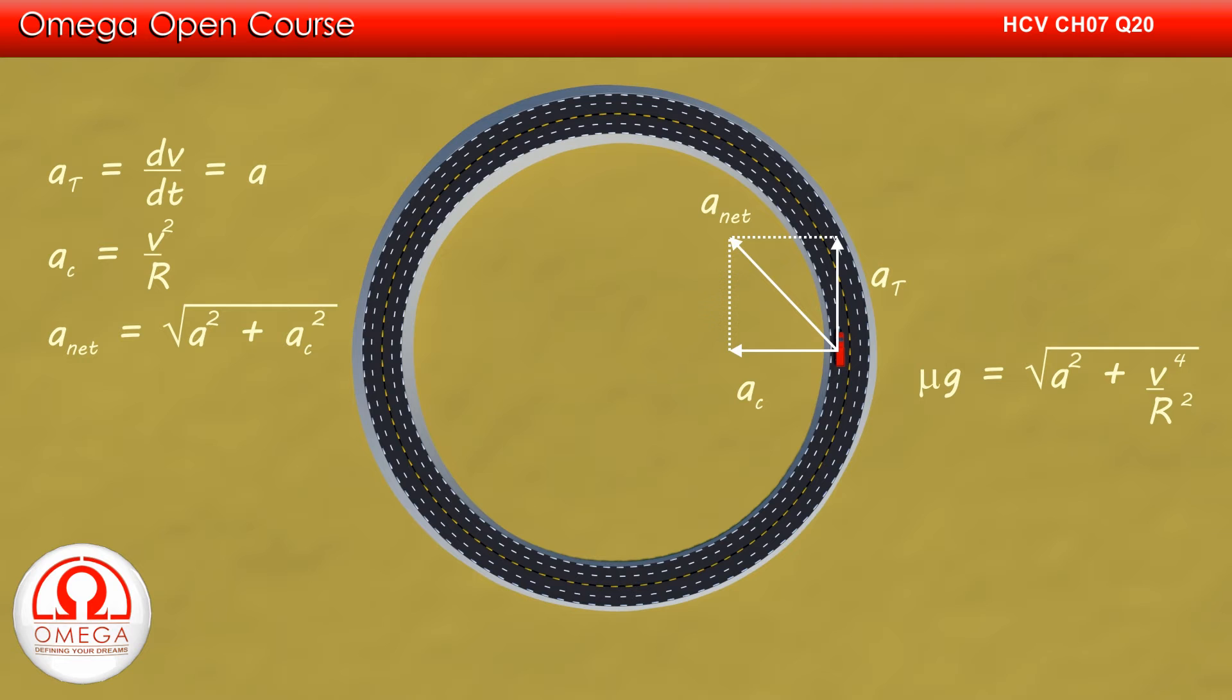Putting the values, we get μg = √(a² + v⁴/R²).